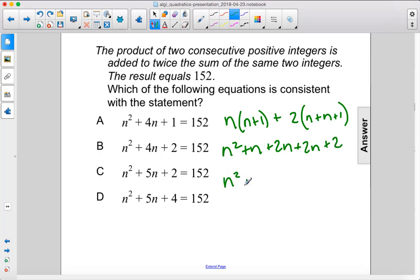So we have n squared plus one, two, three, four, five n plus 2 equals 152.